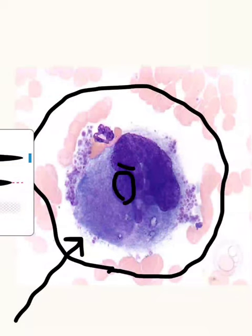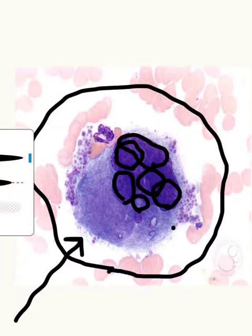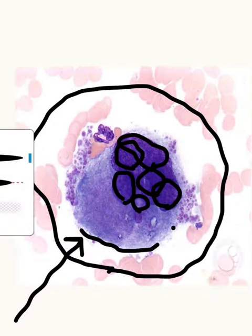Now what happens during the maturation of megakaryocytes, the cytoplasm usually matures but there is no cytoplasmic division, but there is continuous nuclear division. So nuclear division without cytoplasmic division is known as endomitosis and this is a typical feature of megakaryocytes.